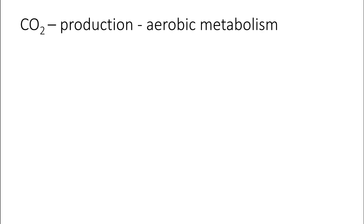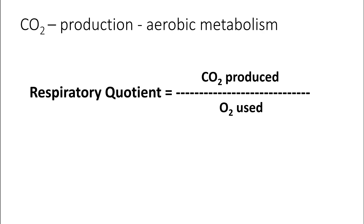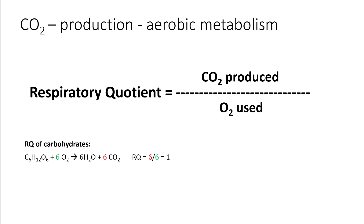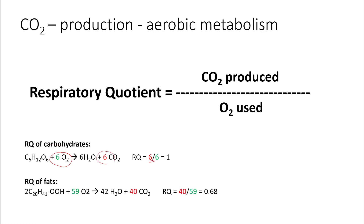CO2 is produced by aerobic metabolism. The key concept here is the respiratory quotient, which is the ratio of carbon dioxide produced divided by oxygen used. For example, the respiratory quotient of carbohydrate is 1 because it uses 6 molecules of oxygen and makes 6 of carbon dioxide. Similarly, the respiratory quotient of fat requires around 59 molecules of oxygen, which produces 40 molecules of carbon dioxide, giving a respiratory quotient of 0.68.